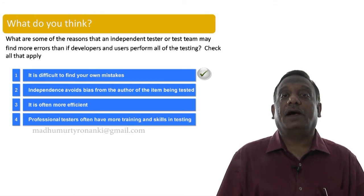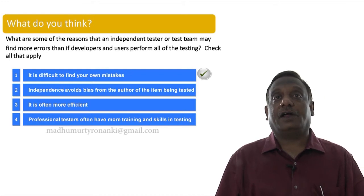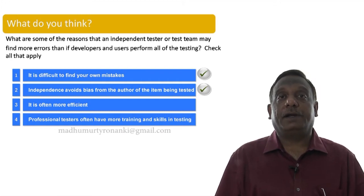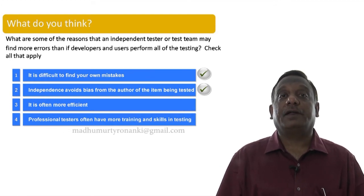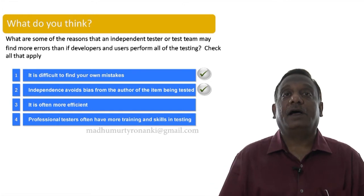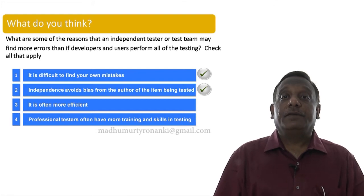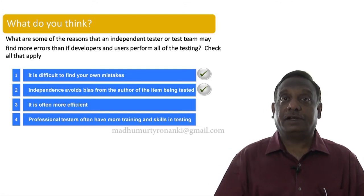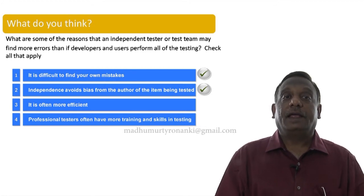The second reason: independence avoids bias from the author of the item being tested. This is also a valid reason. Anyone who produces a document or program has a problem of being biased by their own work — we term it as author bias. Whenever we are dealing with author bias, an independent person or independent team will be able to do the testing much better than the author themselves. That is a valid reason why independent testing teams are useful.